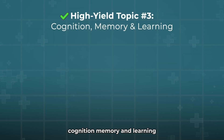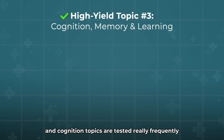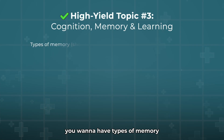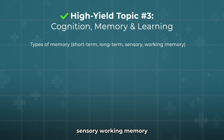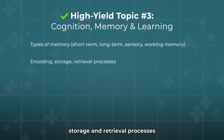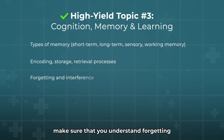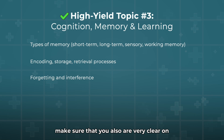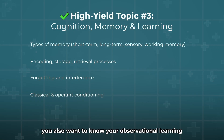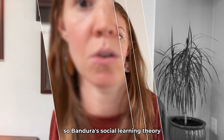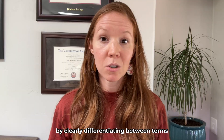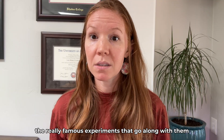High-yield topic number three: cognition, memory, and learning. Memory and cognition topics are tested frequently and clearly on the exam. You want to know types of memory — short-term, long-term, sensory, and working memory — as well as encoding, storage, and retrieval processes. Make sure you understand forgetting and interference, and that you are very clear on classical and operant conditioning. You also want to know observational learning — Bandura's social learning theory. Master these concepts by clearly differentiating between terms and knowing the famous experiments that go along with them.